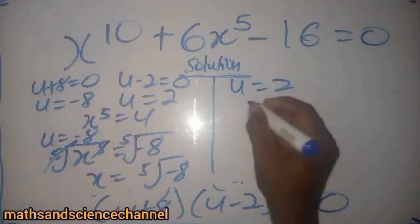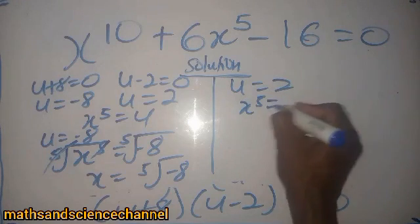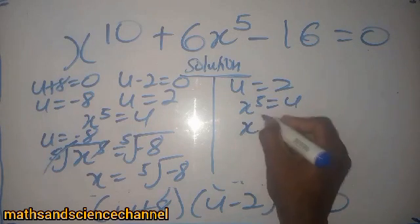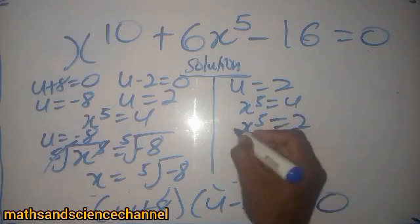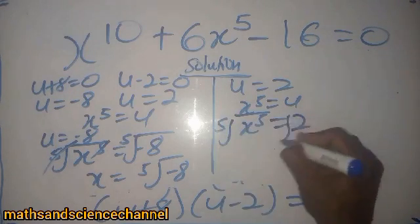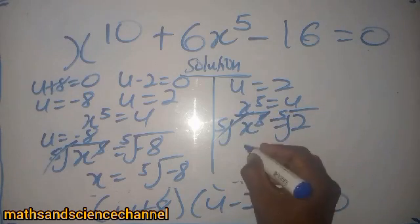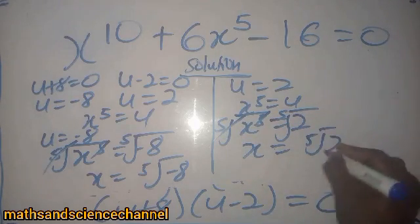And then, when u equal to 2, and then we have x to the power 5 being equal to u, we substitute that x to the power 5 being equal to 2 here. How do we get x? So, we put the fifth root on both sides. This will get rid of that, and x here will be equal to the fifth root of 2.